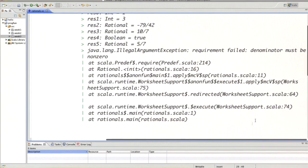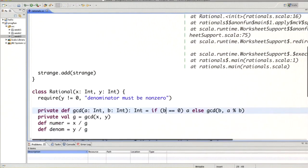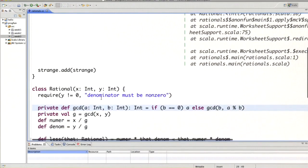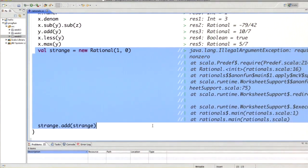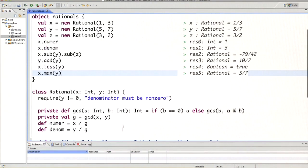If we do that and look at the worksheet, then now our exception has changed. It now says illegal argument exception: denominator must be non-zero. So a require is a test that is performed when the class is initialized here, and if that test fails then you will get an exception, in this case an illegal argument exception. So let me remove the problematic lines to get a clean worksheet again.